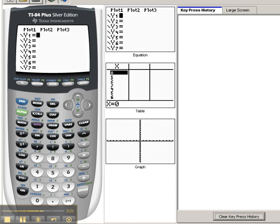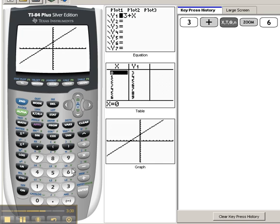So I'm going to go over here to my calculator, and in the calculator we're going to type in 3 plus x. And let's see what that looks like. Zoom 6. So again, it's that nice straight line, exactly what we had anticipated it to be.